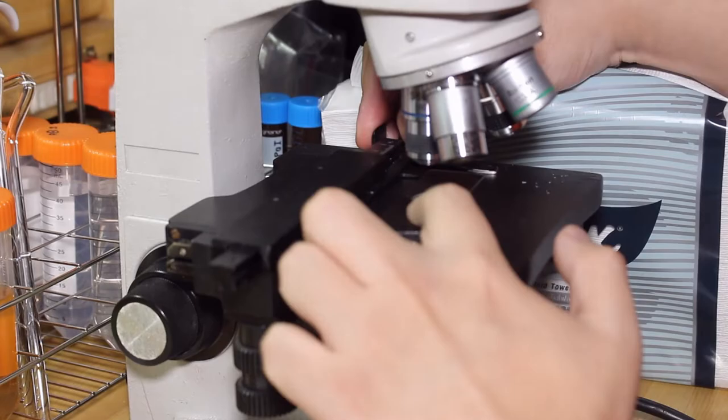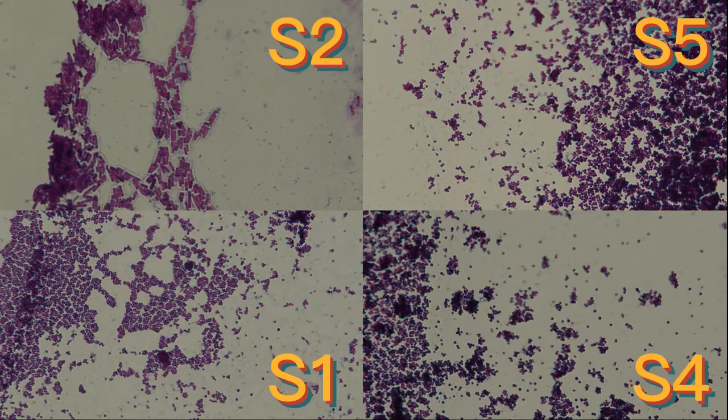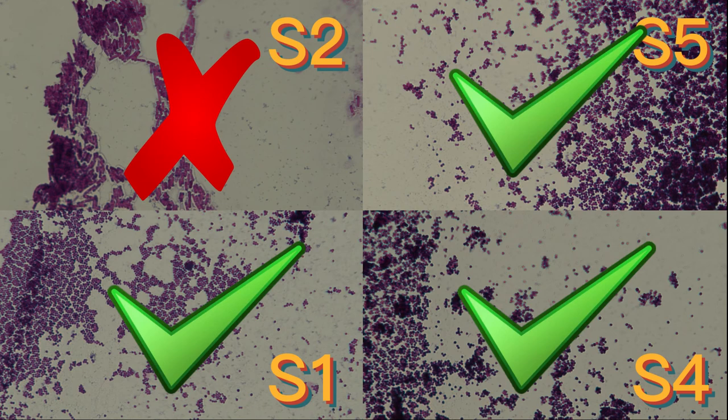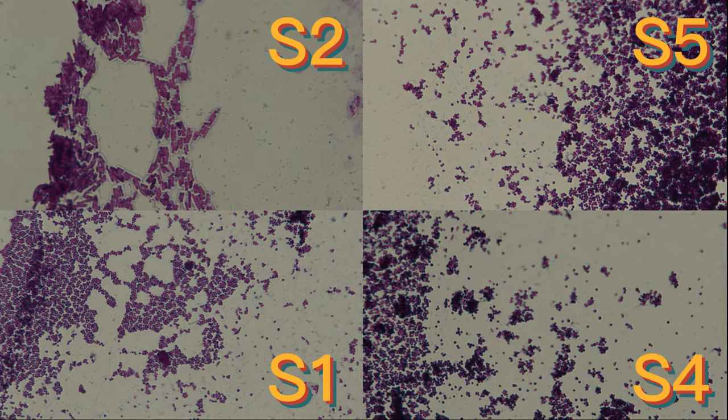These are the samples I have. As we can see here, all samples besides S2 are gram-positive coccal bacteria. Although S2 is rod shaped, which is not the bacteria we're looking for, I'll still include it in the following tests.